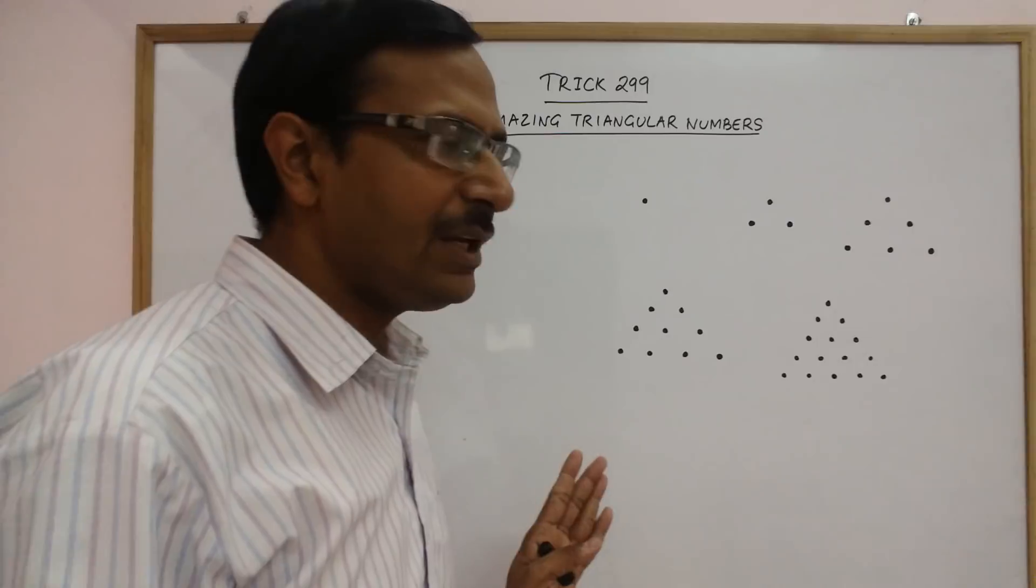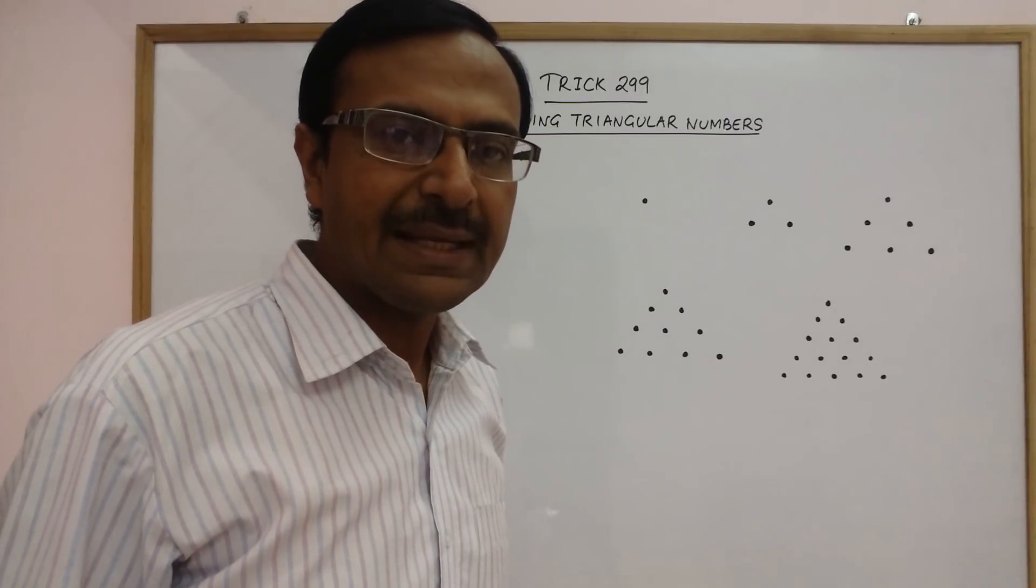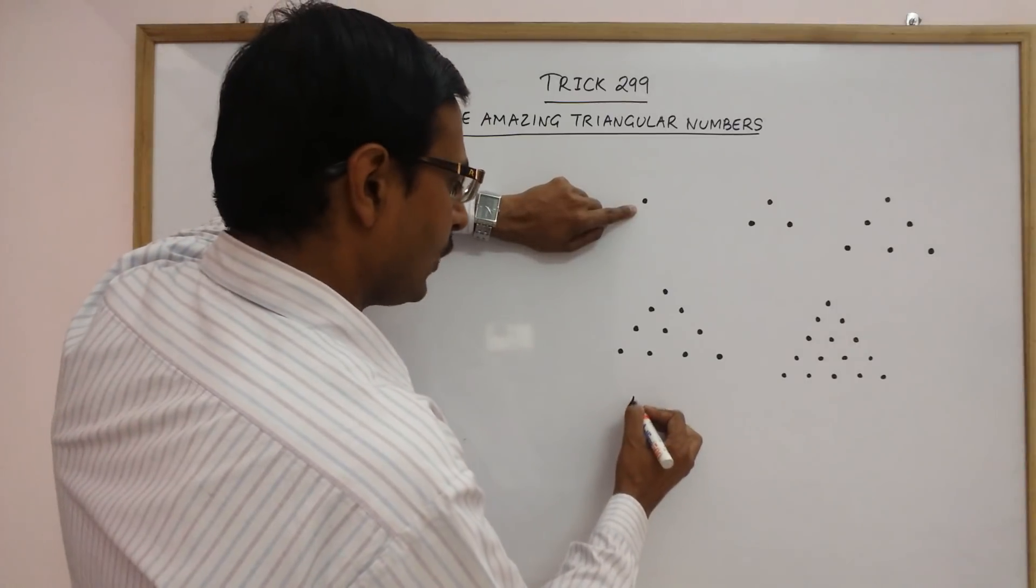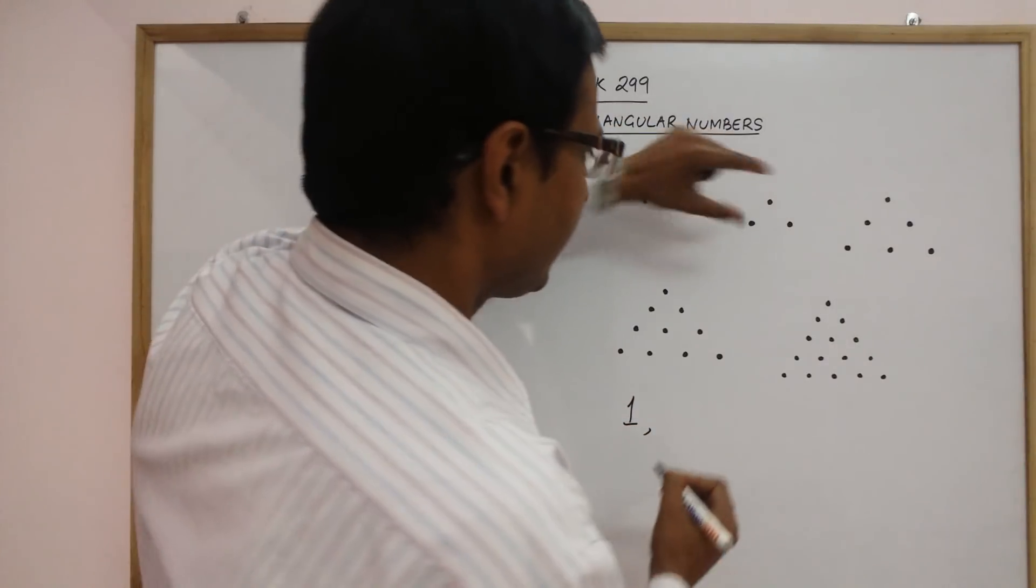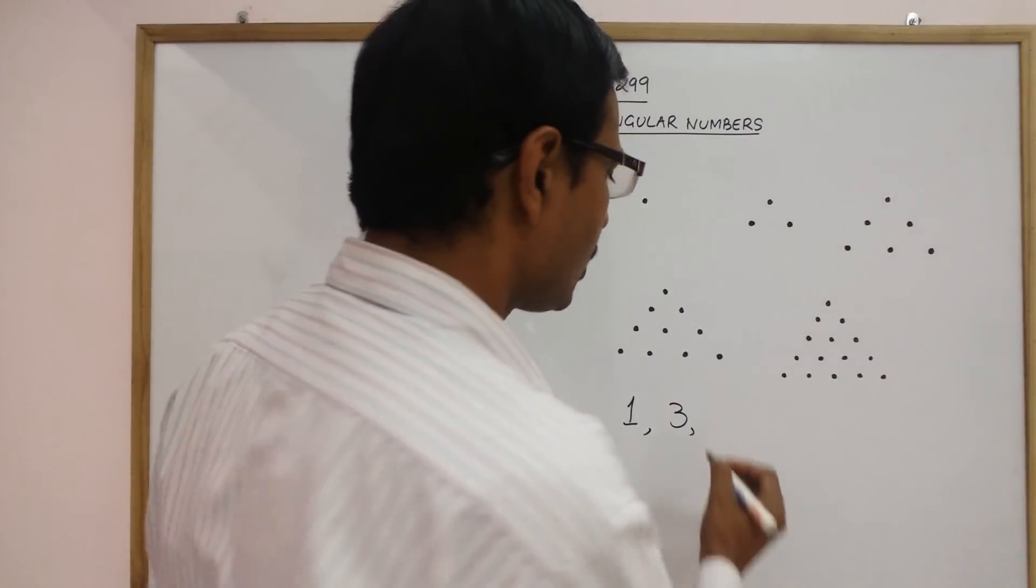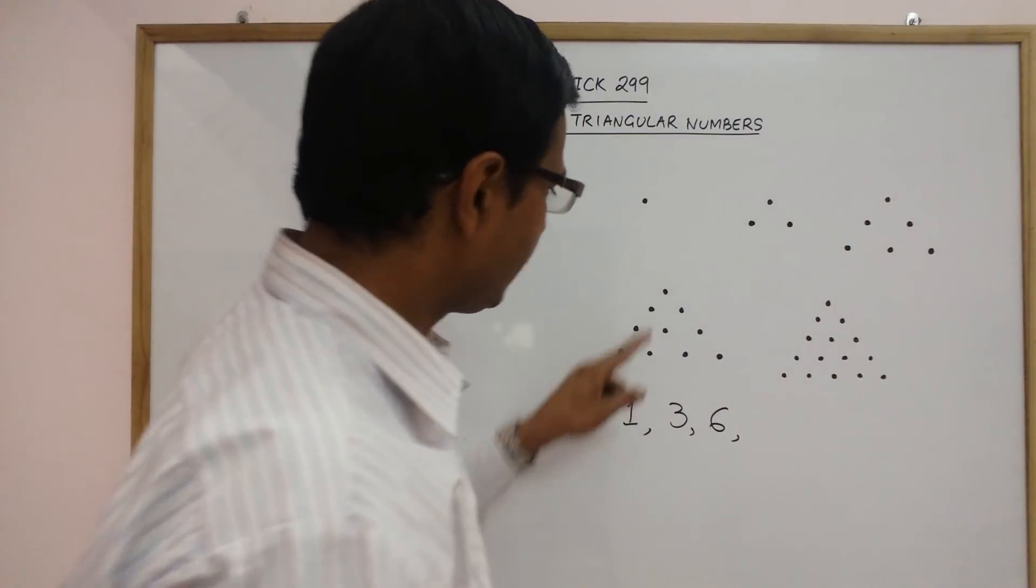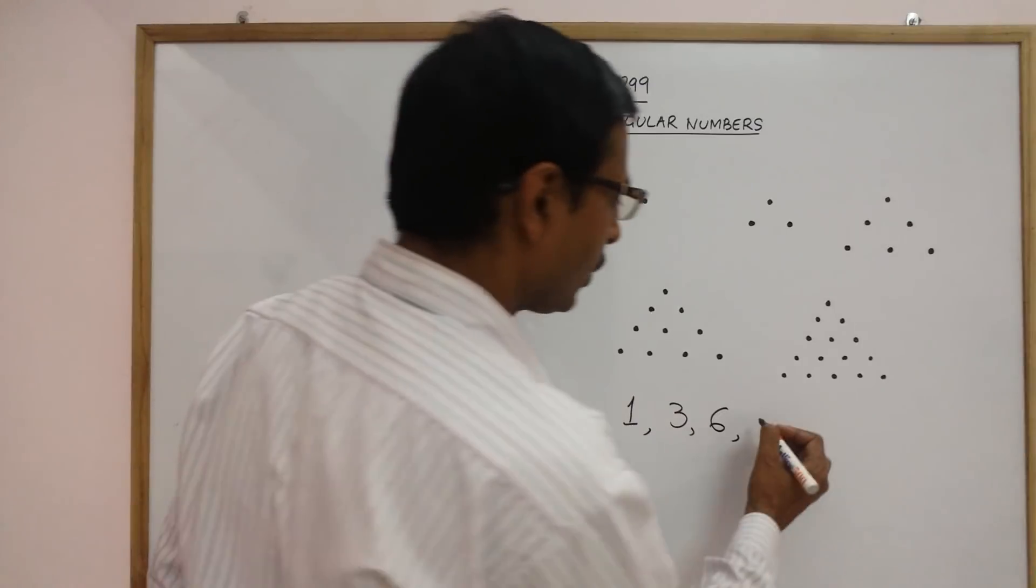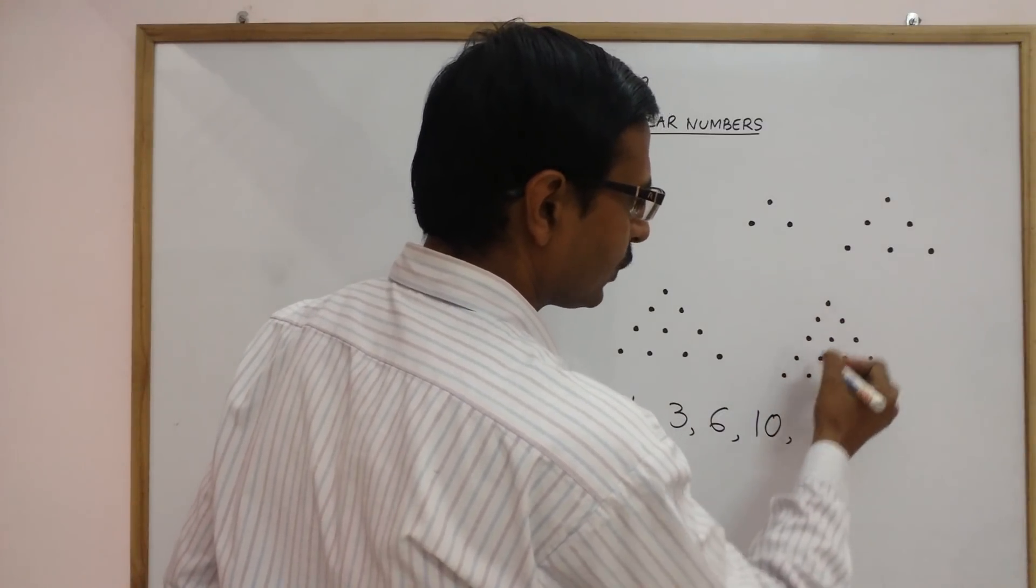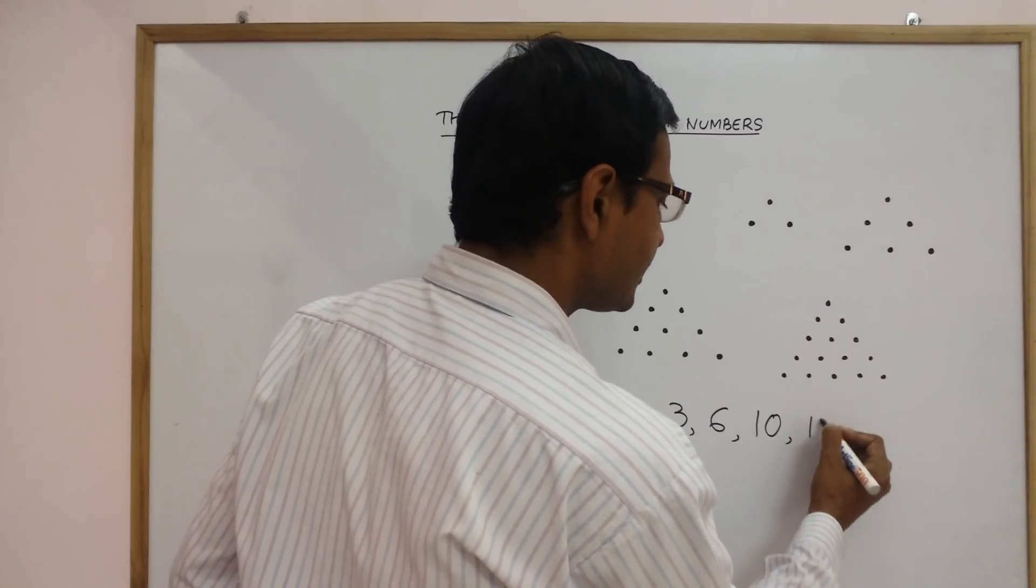Now, let us see how many dots we have used in each triangular number. Now, see here there is only 1 dot, so 1. Here there are 3 dots. Here we have 3 plus 3, 6 dots. And here we have 6 plus 4, 10 dots. Here we have if you count 5 plus 4, 9 plus 3, 12 plus 2, 14 plus 1, 15 dots.